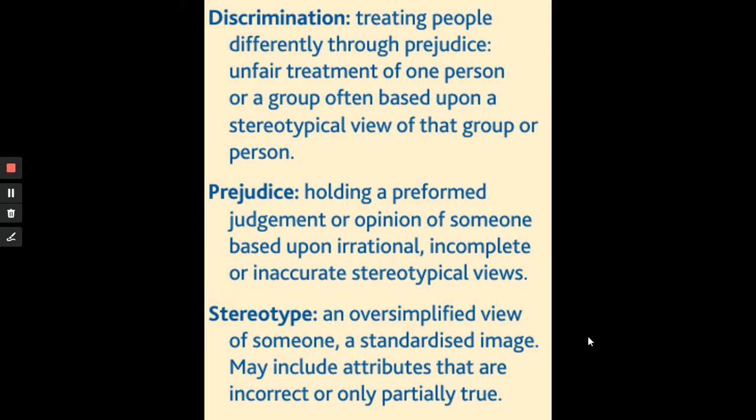Prejudice can be based on a stereotype. Prejudice is where we make a judgment on someone or have an opinion of someone which is often based on irrational, incomplete, or inaccurate stereotypical views. For example, having a prejudice that anyone wearing a hoodie must be a young thug out to cause trouble — that's a prejudicial view. Stereotyping is perhaps an ill-informed view of something, but prejudice tends to be far more irrational and far more negative in its connotation.